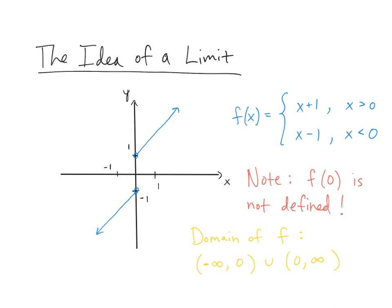Even though this function is not defined at 0, we can still talk about how the function acts as we approach 0. If I start with an x value that's positive and go up to the graph, as I let x go to 0 and follow the graph, the value of the function is approaching the value 1. So the function doesn't actually take on the value 1 when x is 0, but as x approaches 0 from the right, the function tends to the value 1.